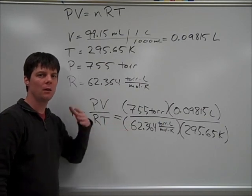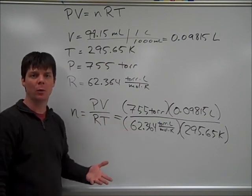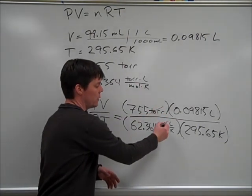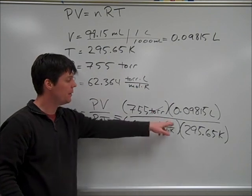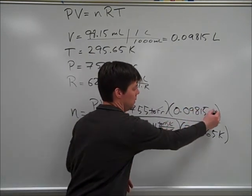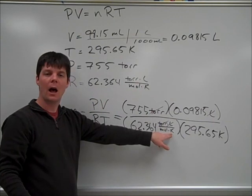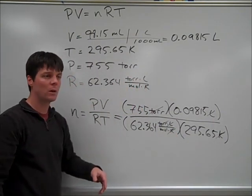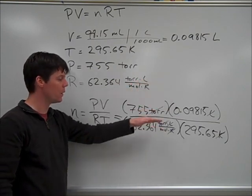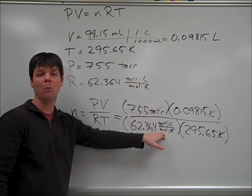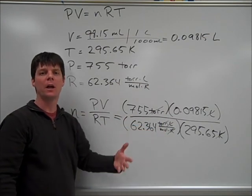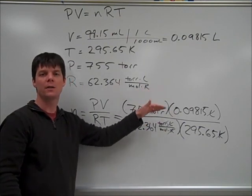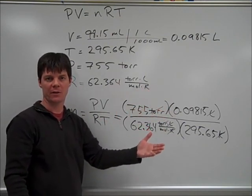Once we've subbed in all of our known values, let's go ahead and evaluate what's happening with the units in this problem. We can see that torr here will cancel with units of torr here. Kelvin here will cancel with Kelvin here. So, we're left with units of 1 over 1 over mole, which is actually going to move this unit of mole into the numerator. Think about dividing 1 by 1 fourth. The answer you get there is 4. So, if we're taking 1 divided by 1 over mole, we'll get moles as our unit.